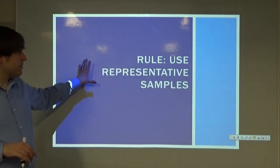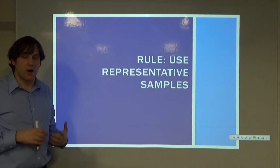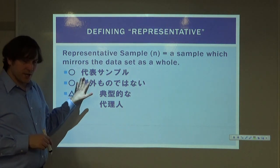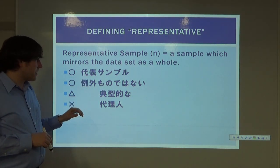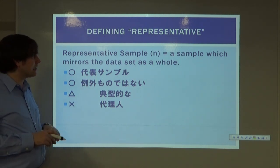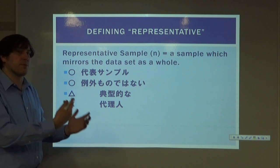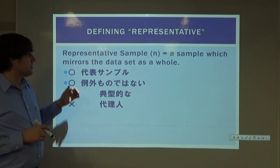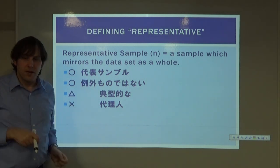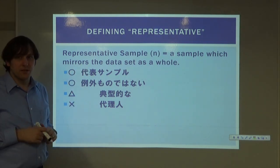The next rule is: use a representative sample. The best phrasing in Japanese is 代表 sample — a sample that mirrors the dataset as a whole. What I mean is: if we grab something at random, it should be the same kind of data that we're looking at. A representative sample stands in for the whole dataset.